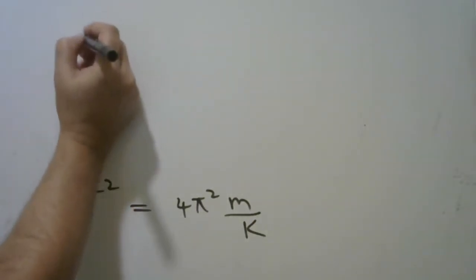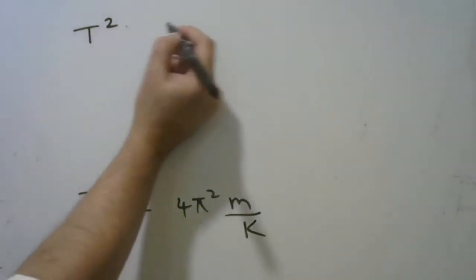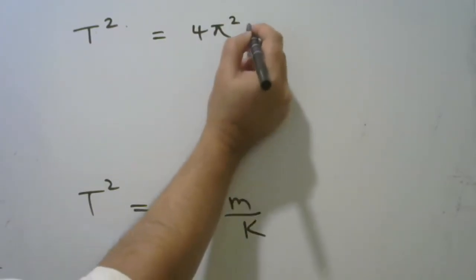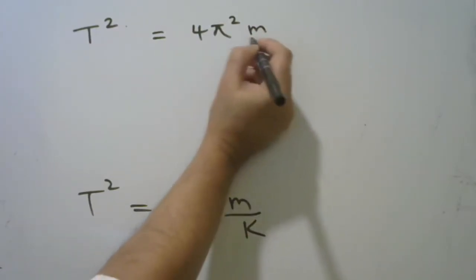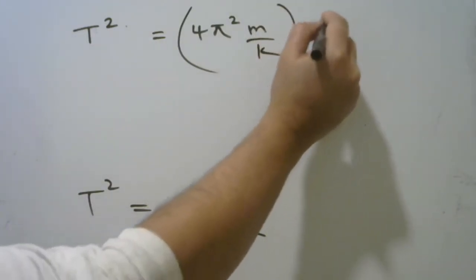So this becomes T squared, we have T squared is equal to 4π squared m upon k. Now, let's say we multiply by k here, and we multiply by k here.